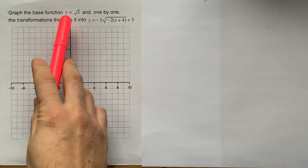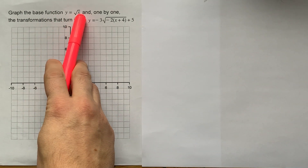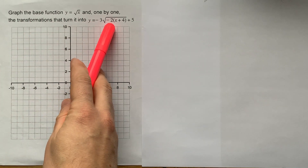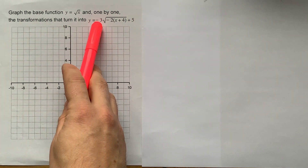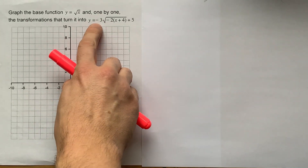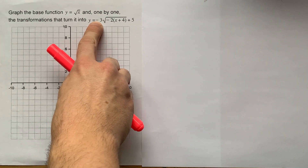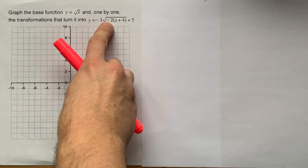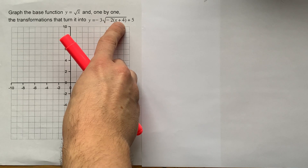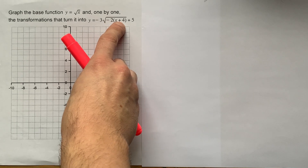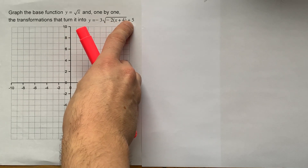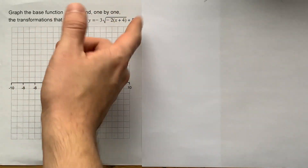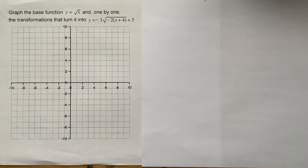We are going to graph the base function y equals the square root of x and then apply six transformations one by one to create this transformed version of a square root function. We have a vertical reflection, a vertical stretch, a horizontal reflection, a horizontal compression, a horizontal translation left 4 units, and a vertical translation up 5 units. The question asks us to graph each transformation along the way.